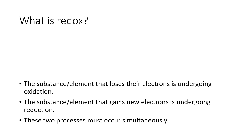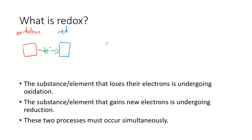The substance or element that loses its electrons is undergoing oxidation. Here we have substance one and substance two, with electrons passing between them. The substance that loses electrons is undergoing oxidation, and the substance that gains electrons is undergoing reduction. This process must occur simultaneously — every time you lose an electron, something must be there to take it.